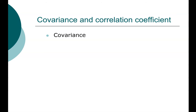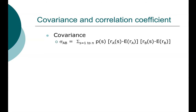The formula for computing covariance is similar to what you have seen before. Notice that the formula is very similar to the formula for variance. We also use the notation sigma, but instead of sigma squared, which is variance, we have sigma of A and B. So instead of looking at how stock A's return deviates from its expectation, we're looking at when stock A deviates from its expectation, how does stock B perform? This capital sigma means sum.